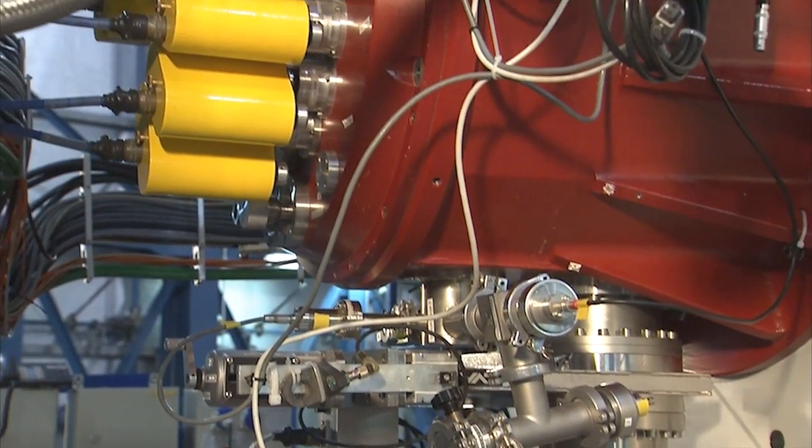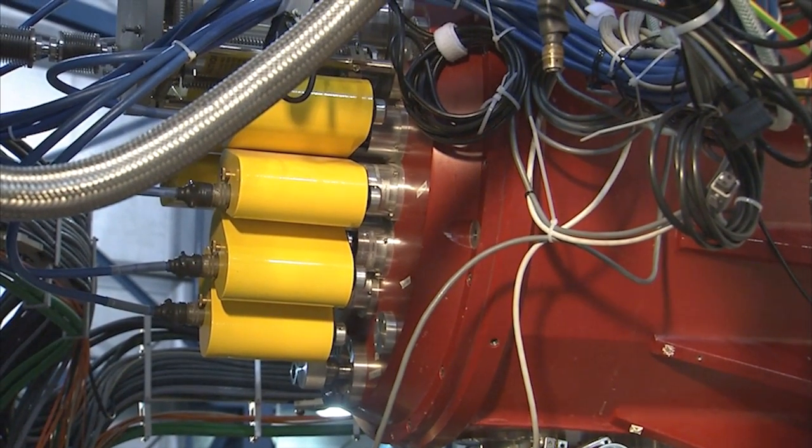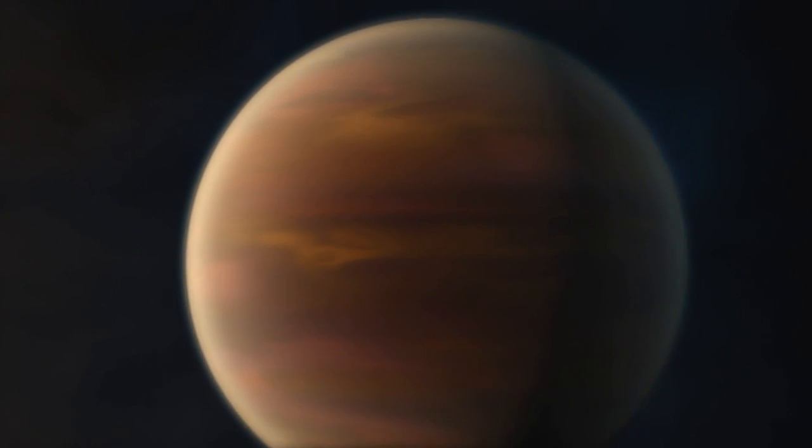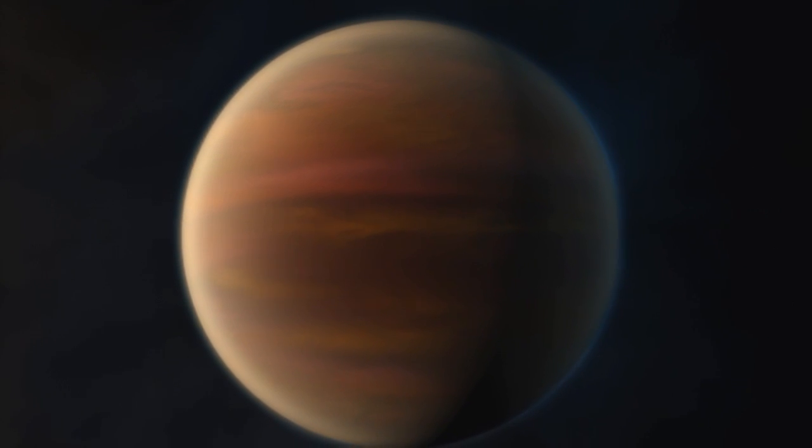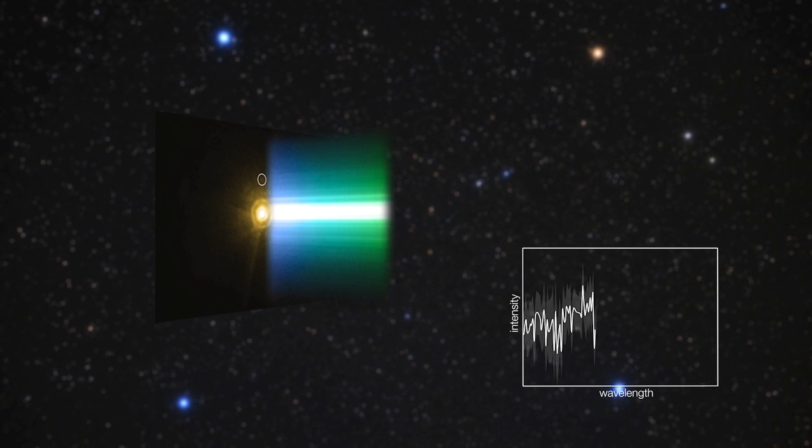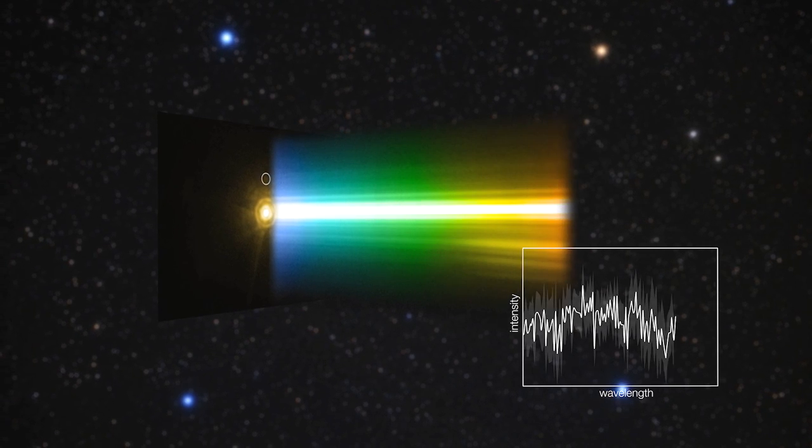NACO's eagle-eyed vision made it possible to measure the light of planet C, a gas giant ten times more massive than Jupiter. Despite the glare of the parent star, the feeble light of the planet could be stretched out into a spectrum, revealing details about the atmosphere.